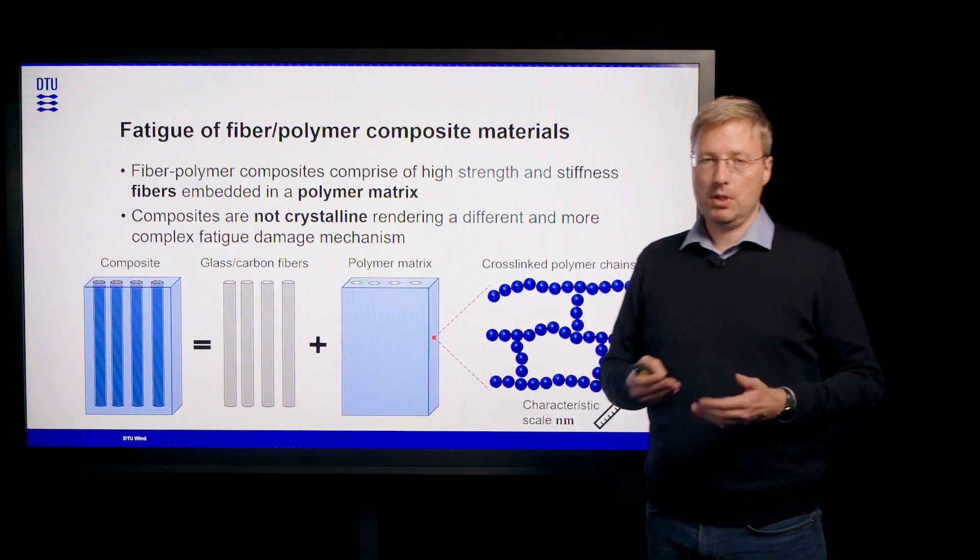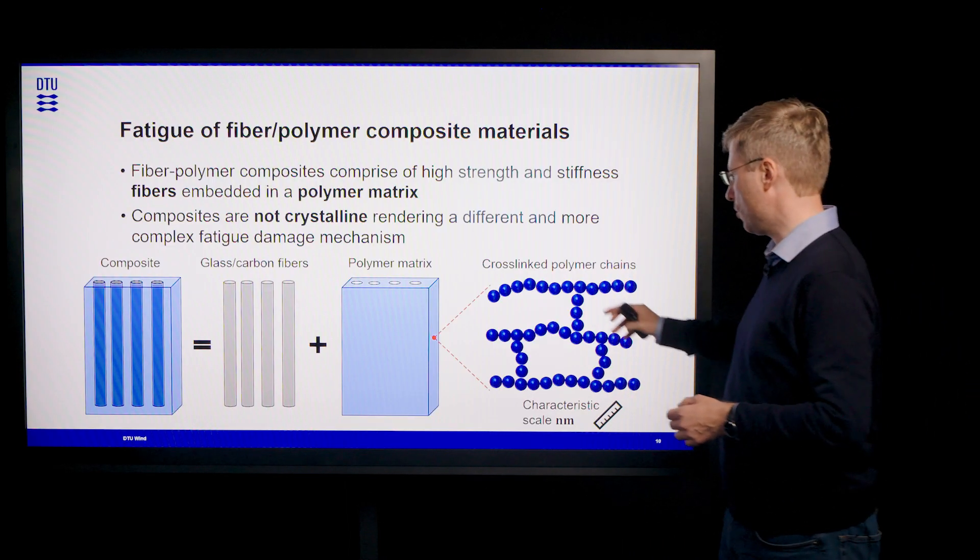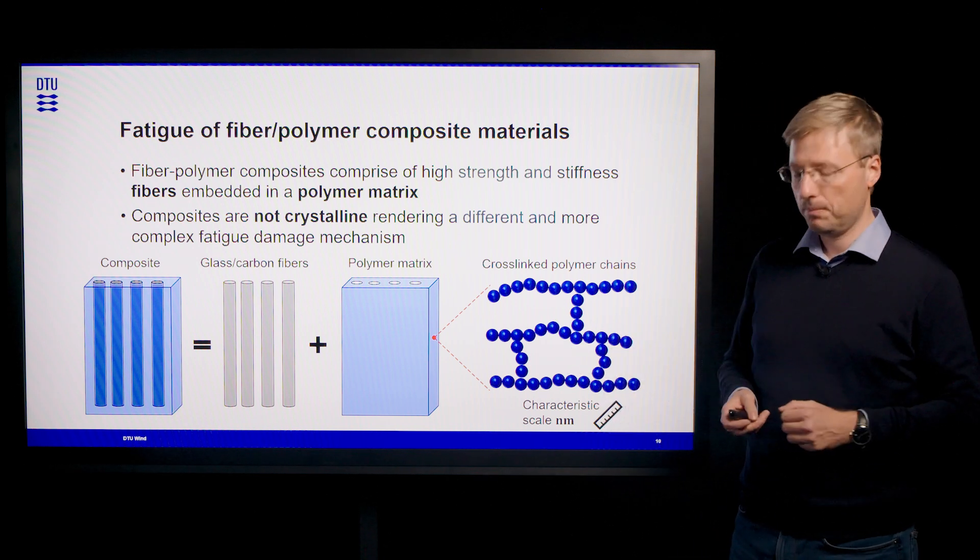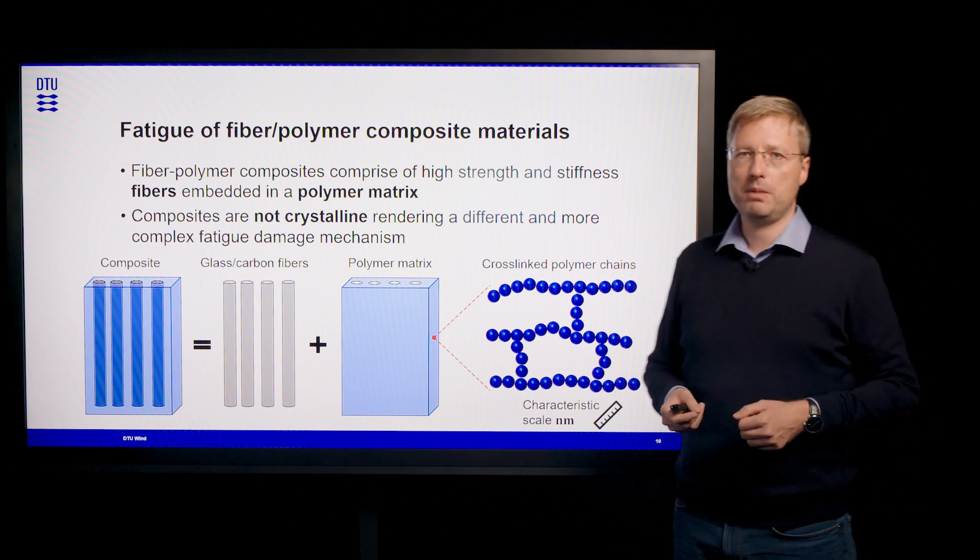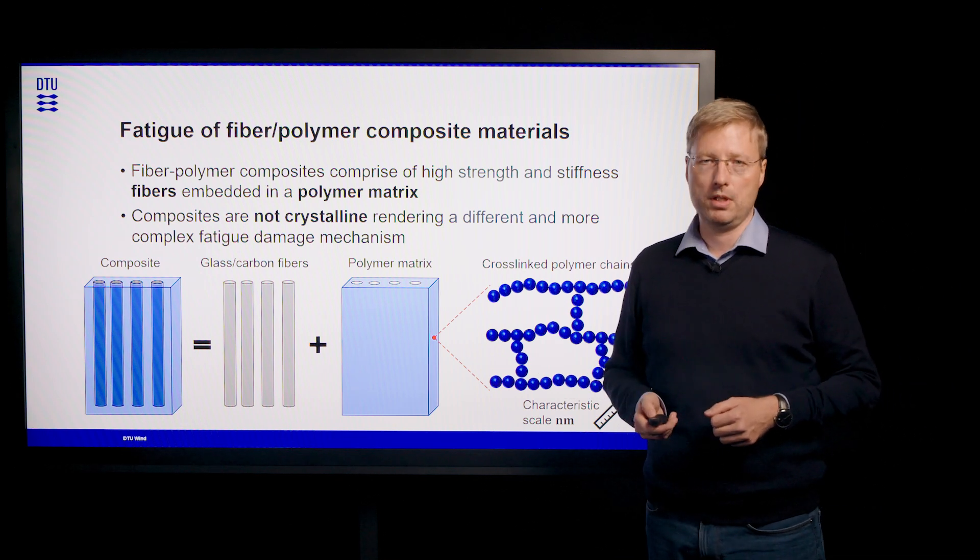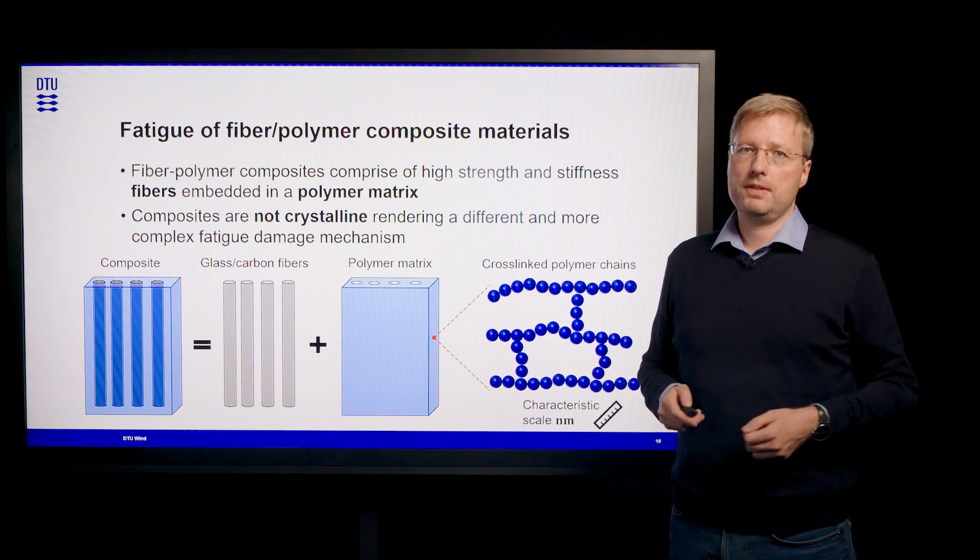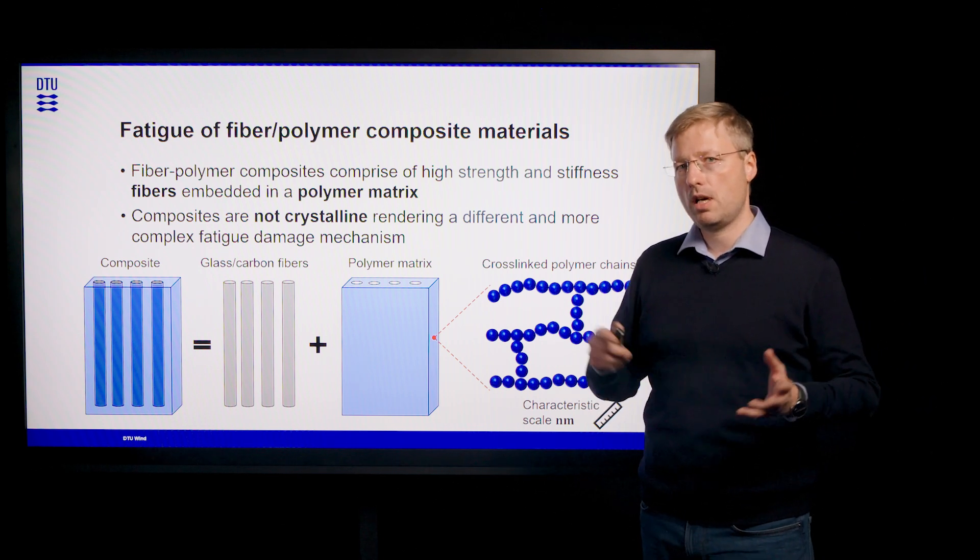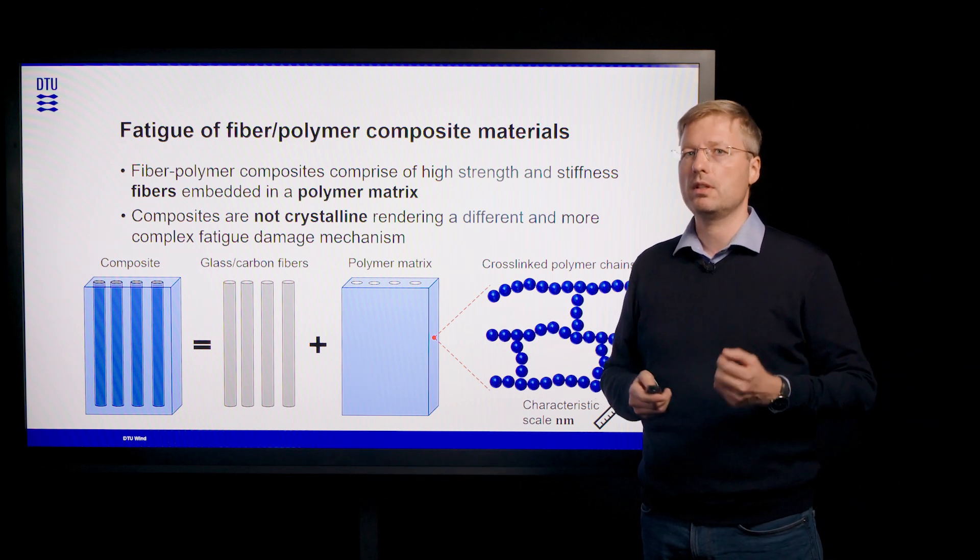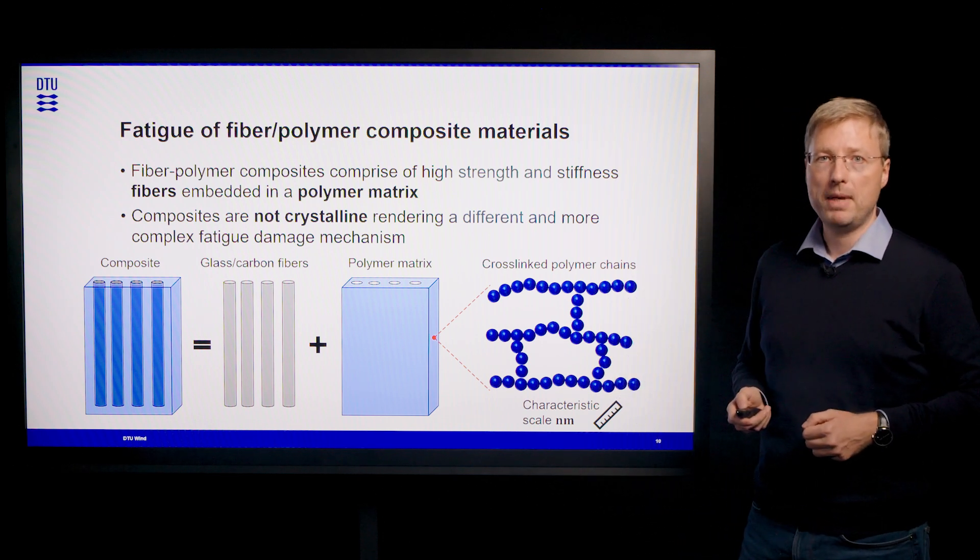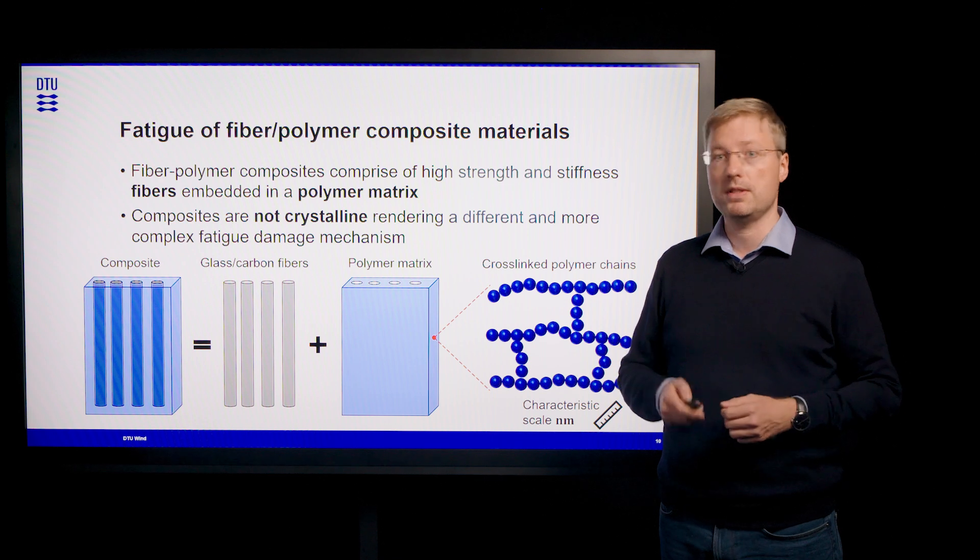Mostly the polymers we use in fiber composites are thermosets and the thermosets have very strong cross-links here giving the polymer its strength. But what is quite obvious by looking at that simplified picture is that the structure of a polymer is amorphous. And although there exist semicrystalline polymers, there are some regions in the polymer they are still amorphous and that's completely different to the crystallic structure of a metal and that already tells us that the fatigue damage mechanism in composites is different.